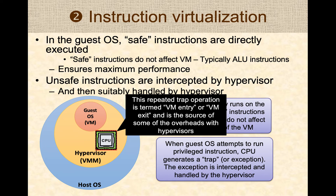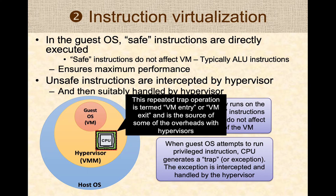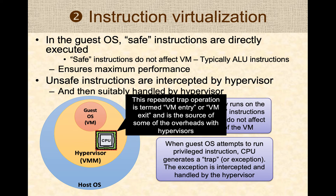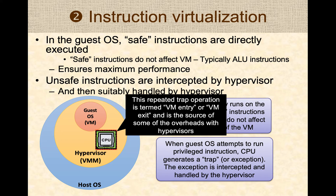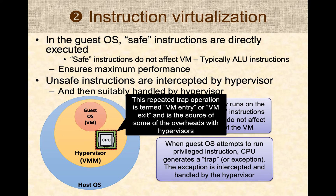The hypervisor handles unsafe instructions and then returns control back to the guest operating system. This process constantly happens as the guest operating system runs different types of instructions. Modern hypervisors have reduced this overhead substantially, but a little overhead still exists because of managing VM entry and VM exit traps generated by the CPU to run unsafe instructions.